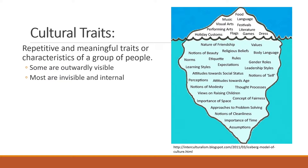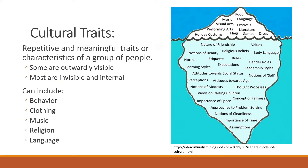Someone who is not a part of that culture will easily be able to recognize those visible traits. However, etiquette and rules, attitudes toward age, and gender roles — all of those other things are below the surface. They're part of the culture but not easily recognizable by an outsider. We typically categorize cultural traits into a few different categories: behavior, clothing, music, religion, and language.